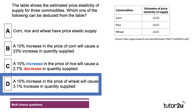Higher prices of rice will cause an increase in the supply of rice, because the price elasticity of supply is positive. D is correct: the price of wheat goes up by 10%, causing only a 3.1% increase in quantities supplied — that is low elasticity.